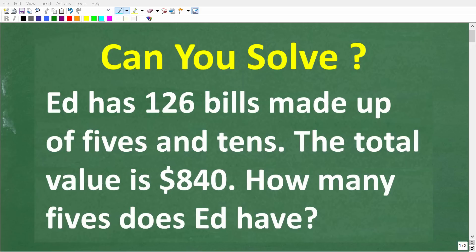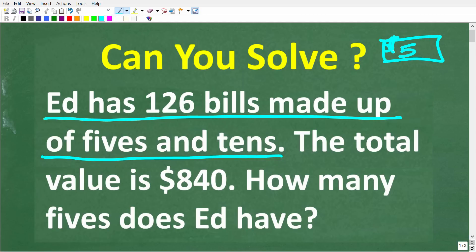Okay, so let's see if we can figure out how to solve this math problem. So the question is, Ed has 126 bills made up of fives and tens.